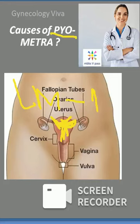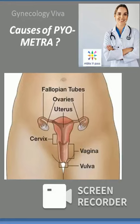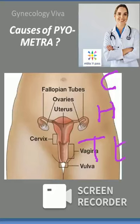After childbirth there can be pyometra. What are the gynecological causes? Gynecological causes include carcinoma, hematometra becoming pyometra because it gets infected, and tubercular endometritis. So remember these causes: carcinoma, endometritis, and infected hematometra.